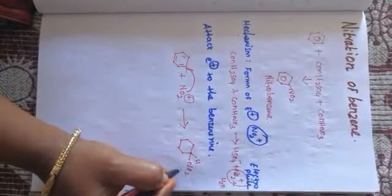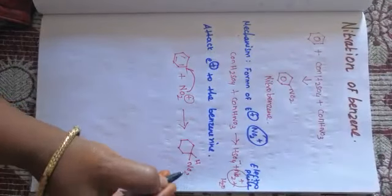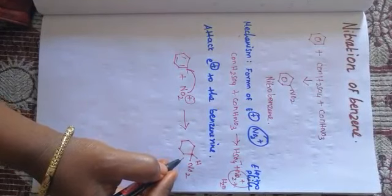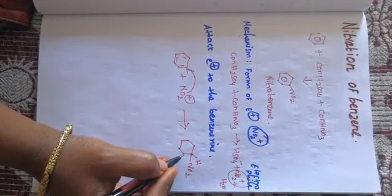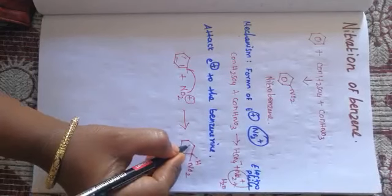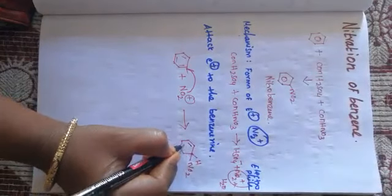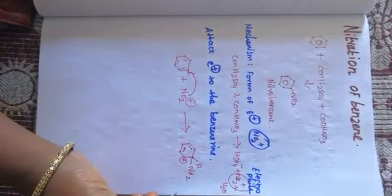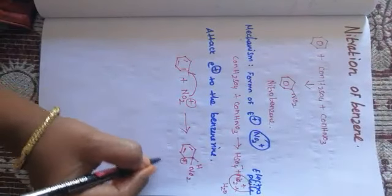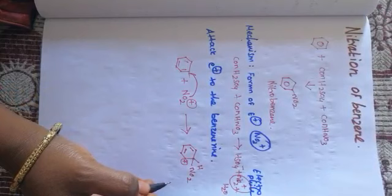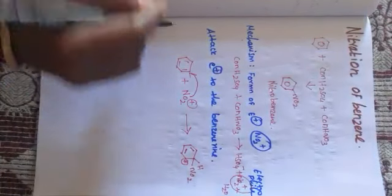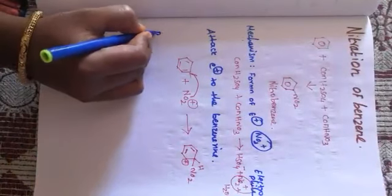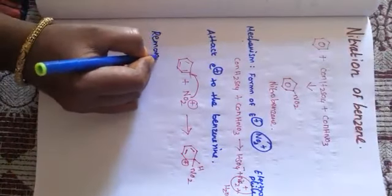The NO₂ is partially removing and partially bonding. Benzene has 3 pi bonds, so a positive charge will be formed and resonance will be taking place. The final step is removal of a proton.